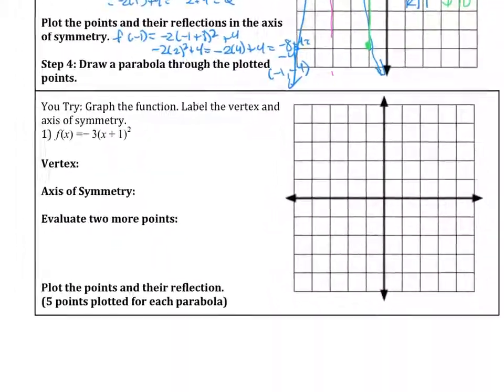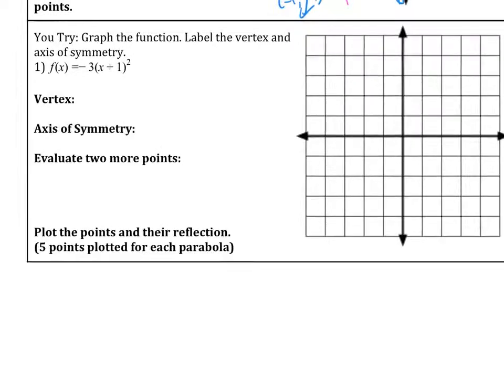Why don't you go ahead and try this example here. Graph the function f of x equals negative 3 times x plus 1 squared. Identify the vertex, draw your axis of symmetry, and either evaluate for two more points or you could use the pattern.